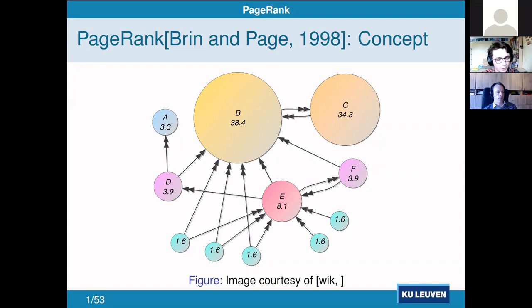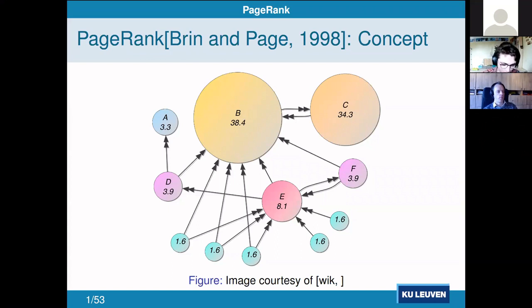The PageRank algorithm determines the importance of a website based on its relation to other websites. Here on the screen we have an example of a smaller internet: the bubbles are websites and the arrows are hyperlinks. Bubbles with more arrows pointing into them are larger and are therefore seen as more important by the PageRank algorithm.